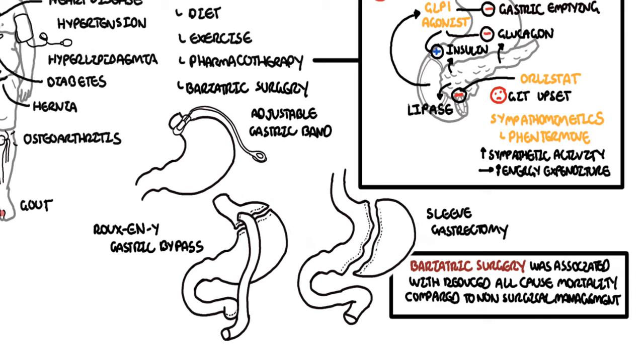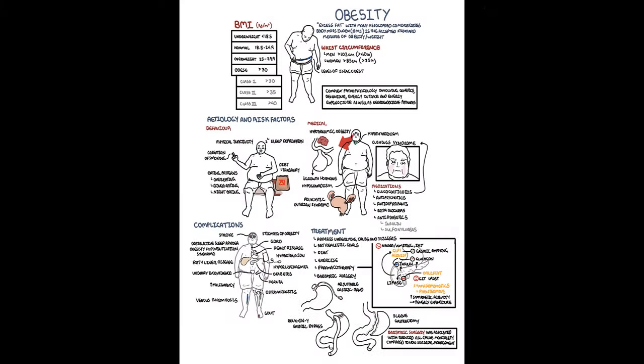In summary, we talked about obesity — how to measure weight using BMI or waist circumference, the different causes and risk factors for obesity, as well as the complications and treatments.